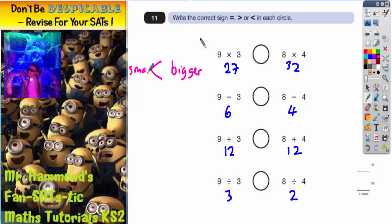And turns his back on the small thing. So in this case 32 is bigger, so the crocodile's mouth must be pointing towards 32.